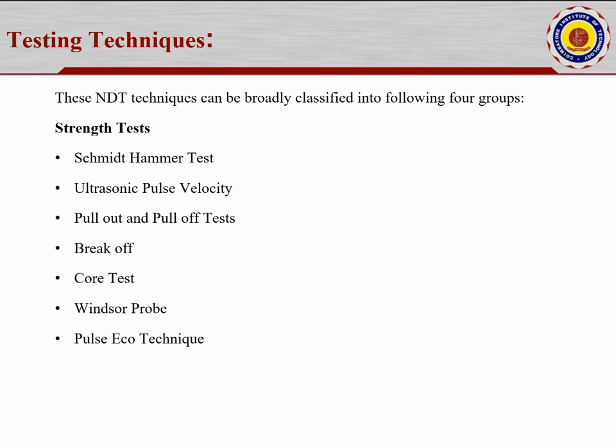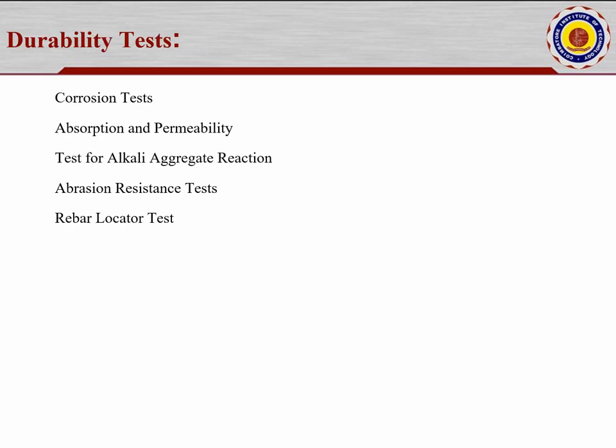Group two is durability tests: corrosion test done in the laboratory, absorption and permeability tests — equipment available in the lab — test for alkali-aggregate reaction using chemical treatment, abrasion resistance test which can be carried out in both the field and the lab, and rebar locator test.